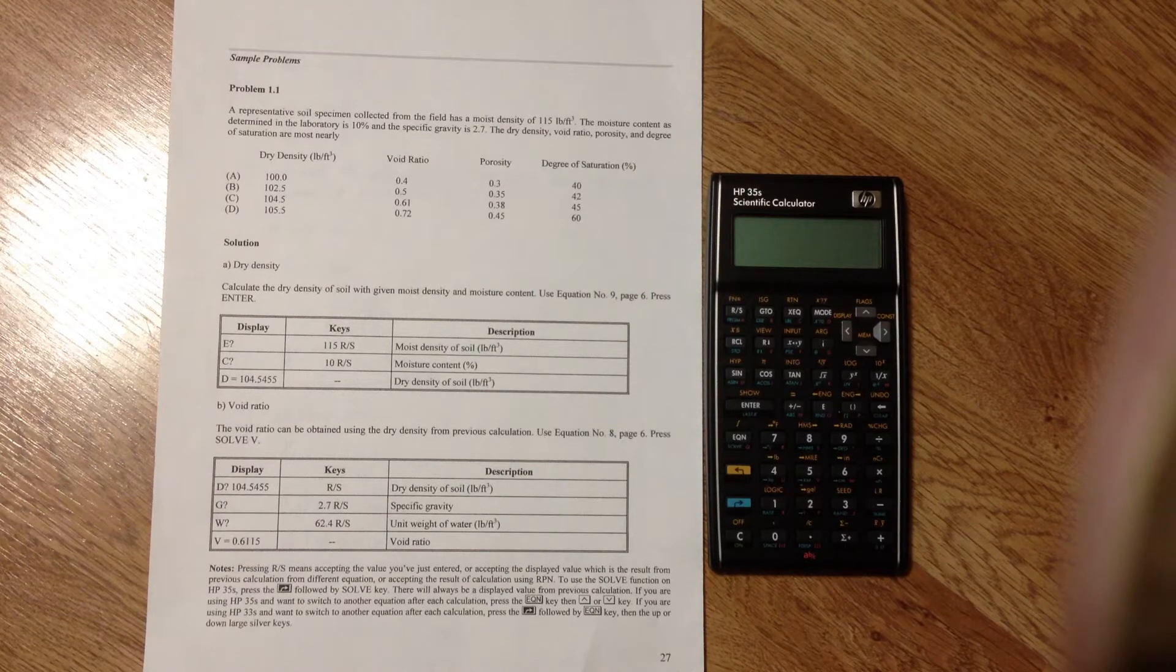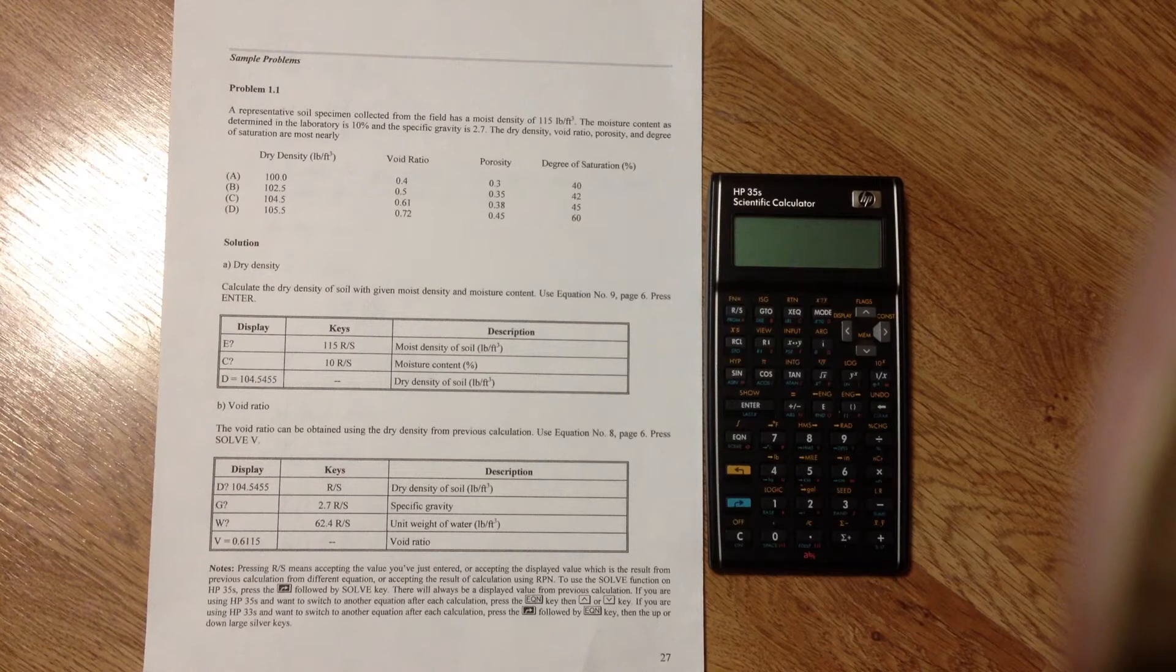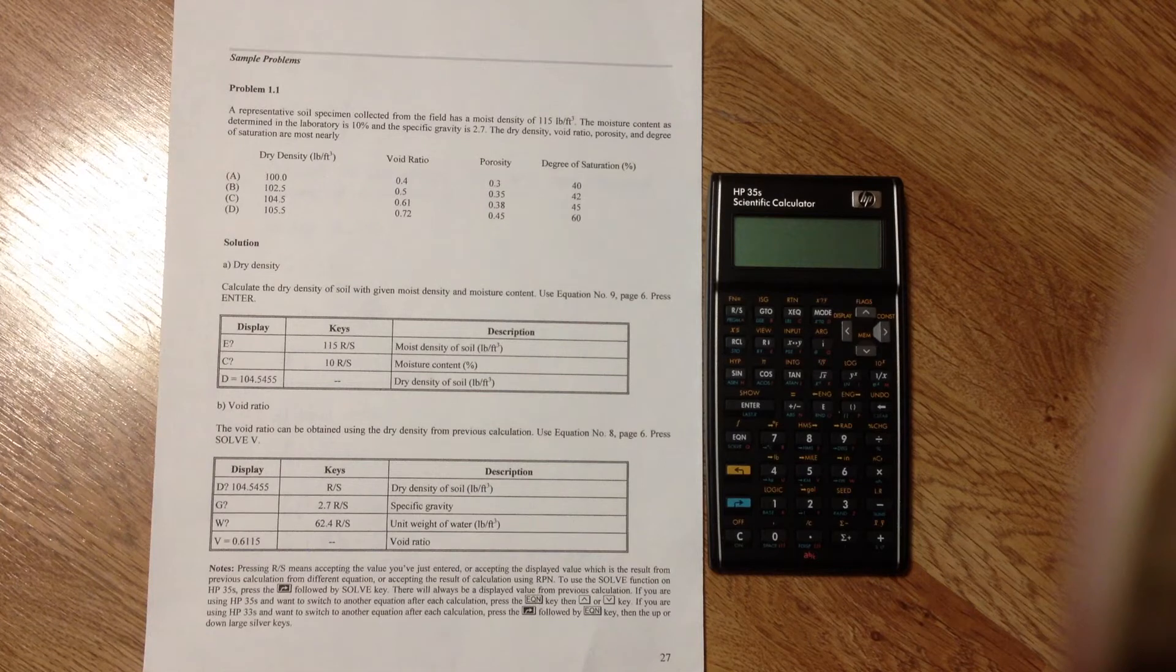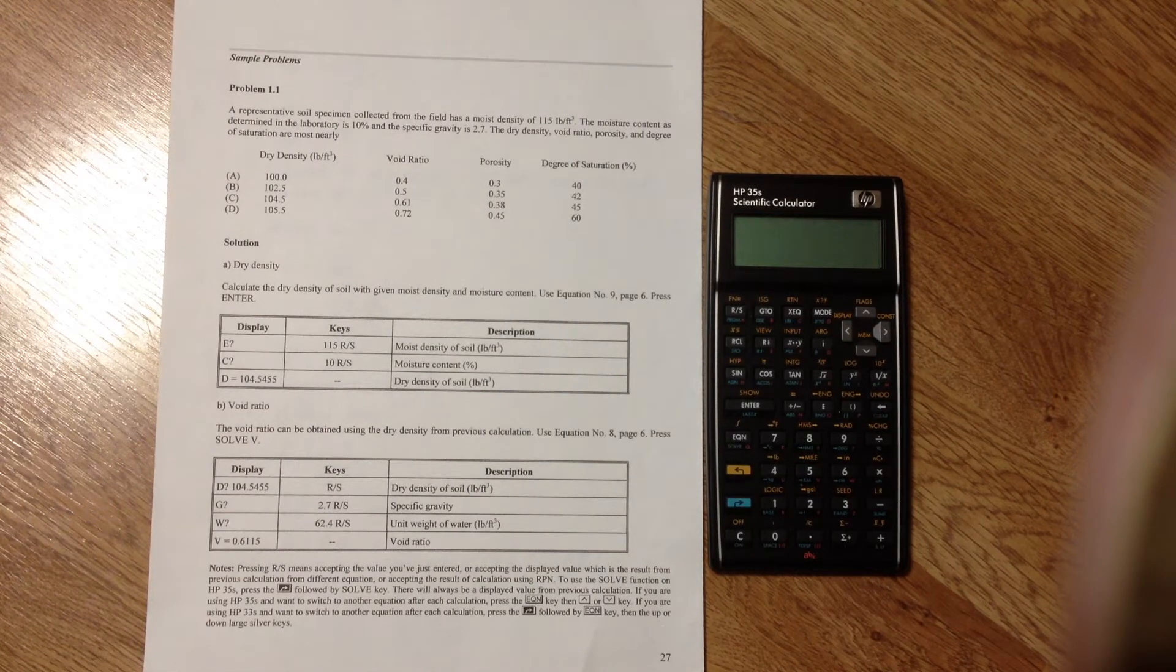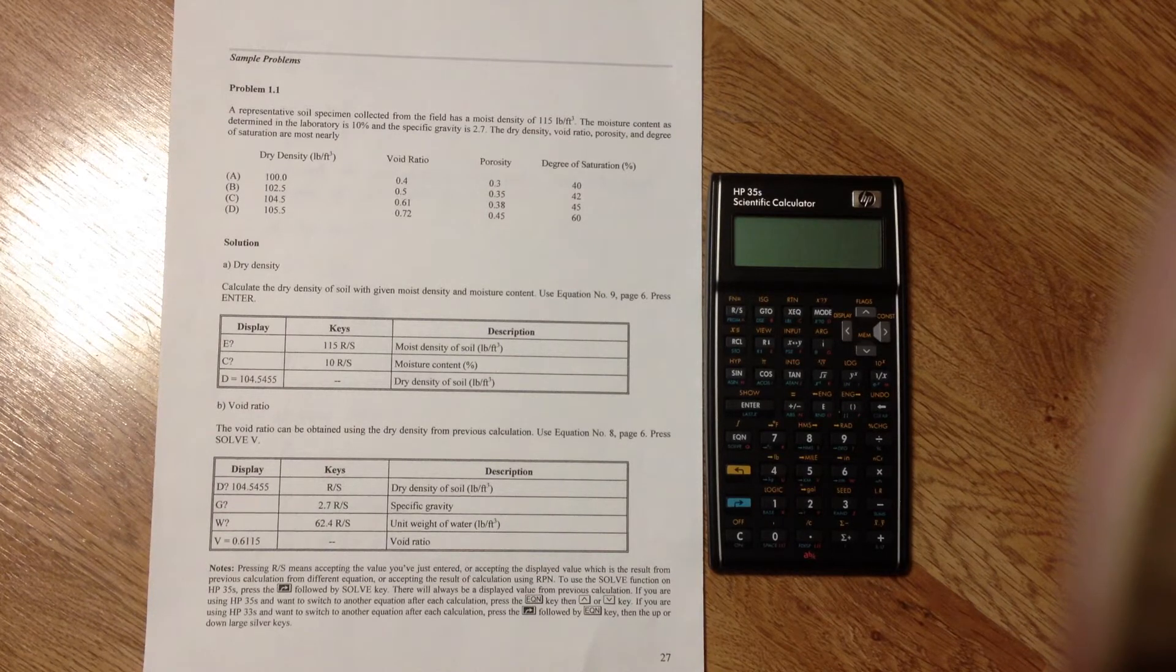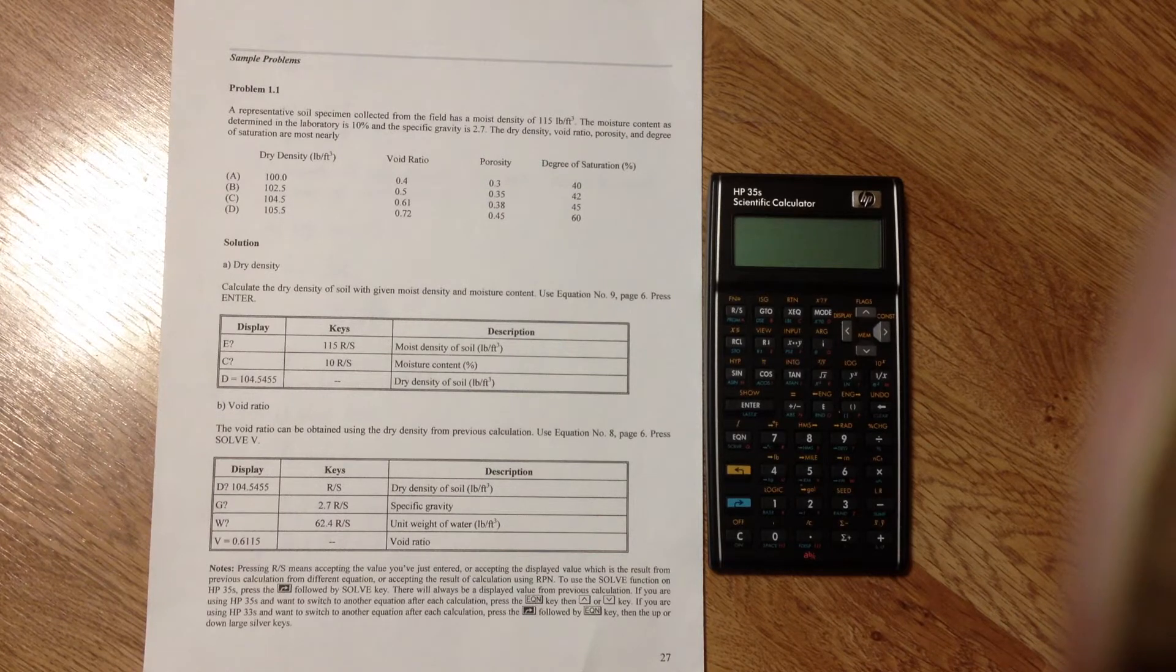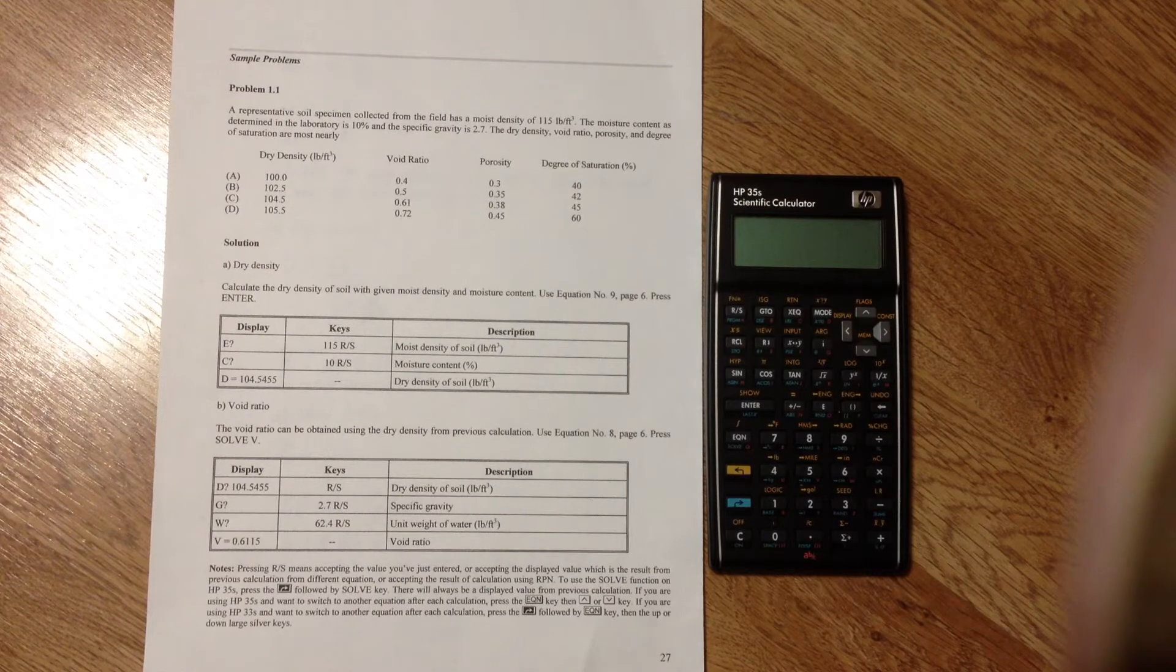I have a sample problem here, it's a geotechnical problem. A representative soil specimen collected from the field has a moist density of 115 pounds per cubic foot. The moisture content as determined in the laboratory is 10% and the specific gravity is 2.7. The dry density, void ratio, porosity, and degree of saturation are most nearly.